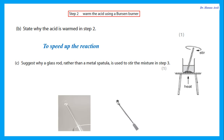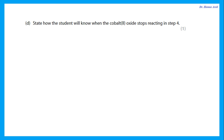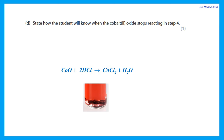A glass rod rather than a metal spatula is used to stir the mixture because metal reacts with acid, but glass does not. The student will know when cobalt oxide stops reacting in step 4 because excess solid remains at the bottom of the beaker and does not dissolve — it is not reacting anymore. Note: do not say 'no fizzing or no bubbles of gas' because cobalt oxide plus hydrochloric acid gives cobalt chloride plus water — this does not produce a gas.